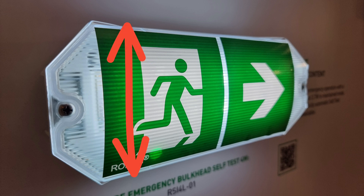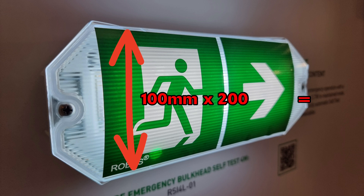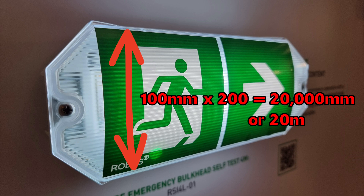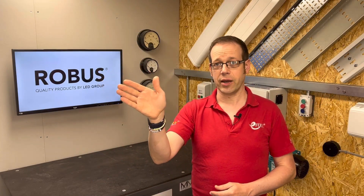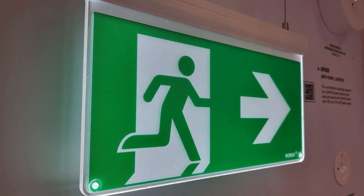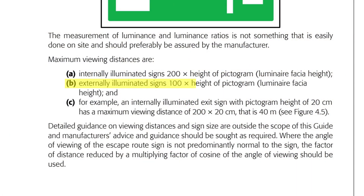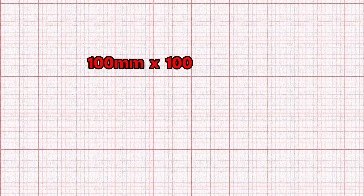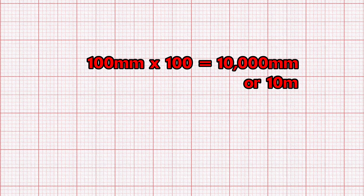On this Robus fitting the sign is 100mm high; multiplying by 200 gives 20,000mm or 20 metres — the maximum distance at which the sign can be seen and legibly understood as giving a direction to safety. If the fitting is at the end of a long corridor, it may be necessary to either install a fitting with a taller pictogram or add another sign further along. For externally illuminated signs — lit from a separate emergency fitting — the distance is reduced to 100 times the height of the pictogram, giving a viewing distance of 10,000mm or 10 metres: a smaller range but entirely acceptable within that limitation.